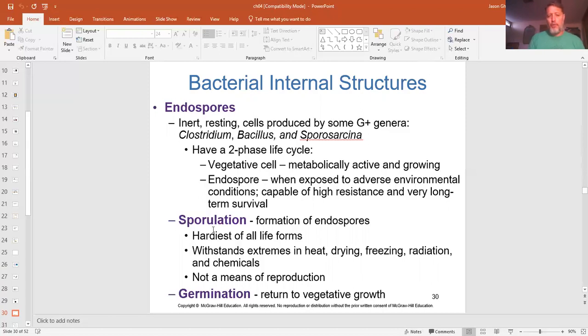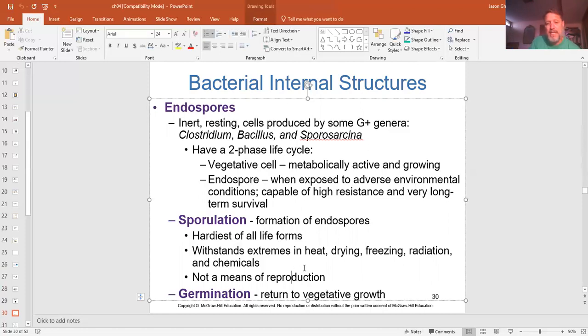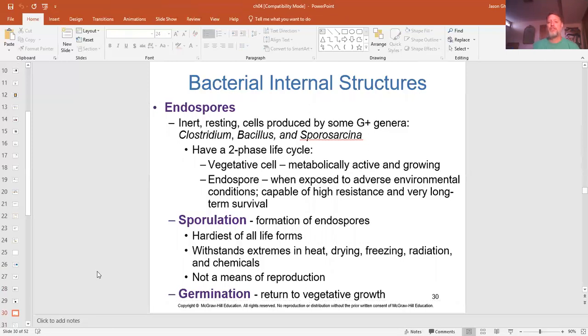They're very resistant and can have a long-term survival rate. So the sporulation, again, the hardest of all life forms that we know of, they can withstand extreme heat, drying, freezing, radiation, lots of different chemicals. It is not a means of reproduction though. When conditions get right for them again, they'll germinate and go back to their vegetative state, which is what we normally think of as bacteria going through their life cycle.